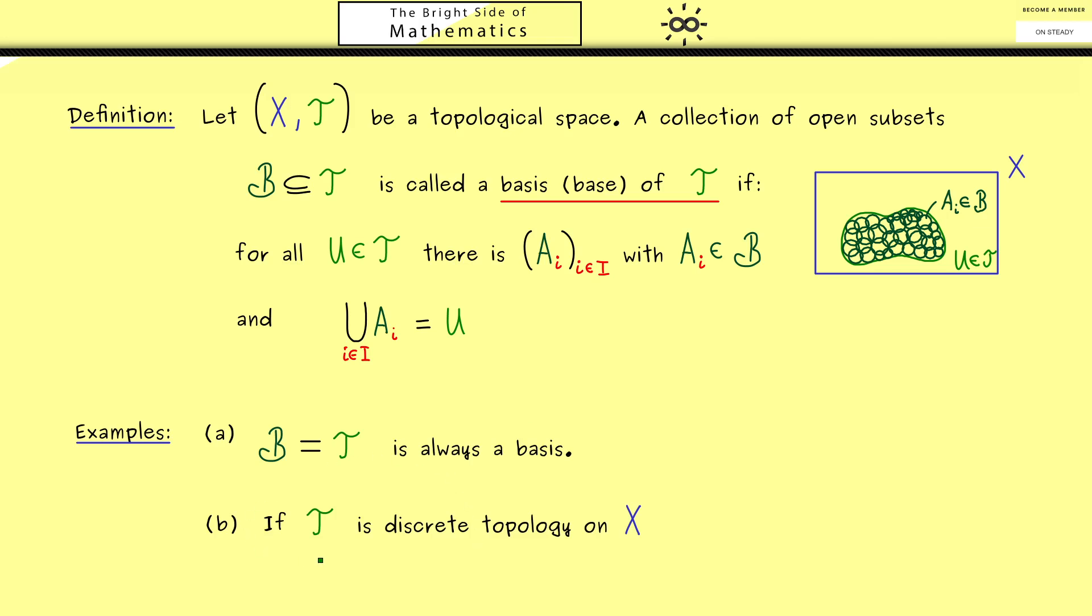However, the next example only works for the discrete topology on X. There, please recall, in this topological space every subset of X is open. And therefore we can nicely generate all sets when we just take singletons, which means we have subsets with just one element inside.